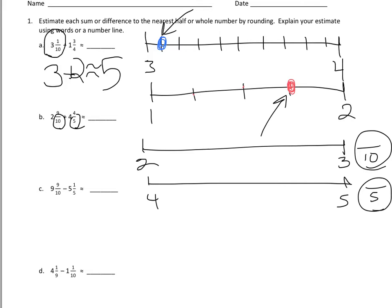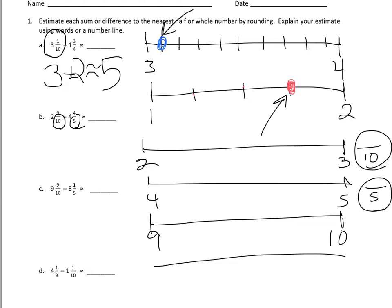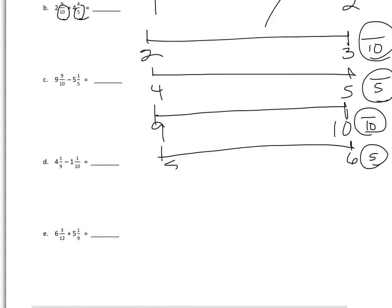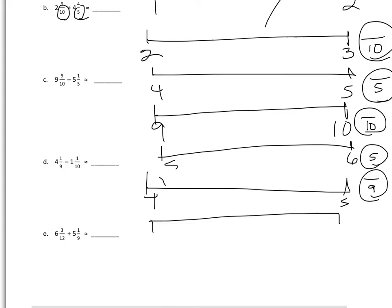For problem C, they're going to draw a number line between 9 and 10, and then a number line between 5 and 6. For 9 and 10, they're going to break it into tenths; for between 5 and 6, they're going to break it into fifths. For problem D, they're going to draw between 4 and 5, breaking it into ninths, and then between 1 and 2, breaking it into tenths.